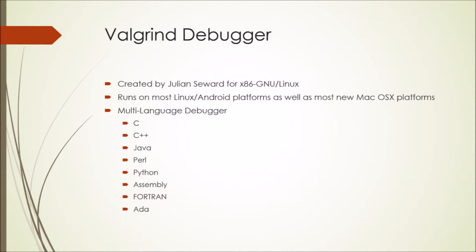The next debugger I'd like to talk about is Valgrind. Valgrind was created by Julian Seward for the x86 GNU and Linux operating systems. Today, Valgrind runs on most Linux and Android platforms, as well as most of the newer Mac OS X platforms. Like GDB, Valgrind is a multi-language debugger and supports C, C++, Java, Perl, Python, assembly languages, Fortran, and Ada — which is more than GDB, but still includes most of the same languages.